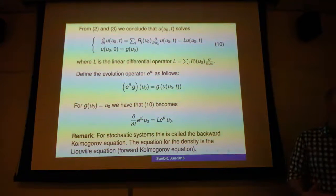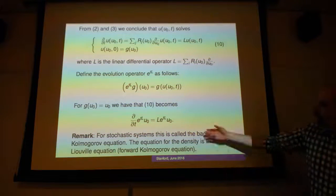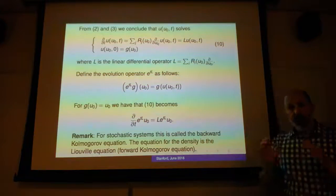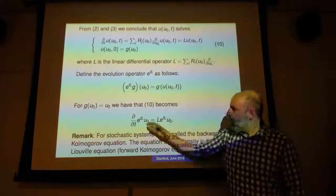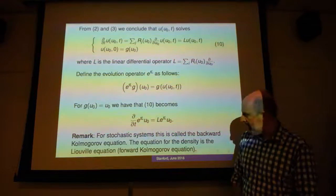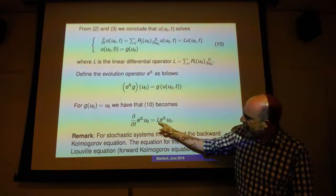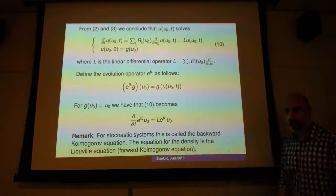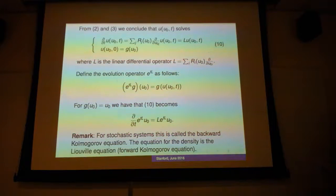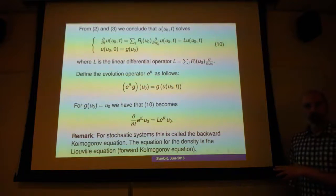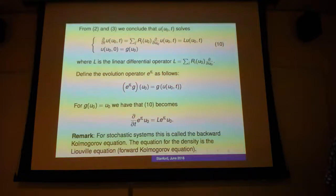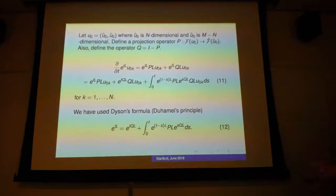These linear PDEs, if you have a background in probability or statistical physics, correspond to the backward Kolmogorov equation for the evolution of observables. The forward Kolmogorov equation — for the probability density — is what physicists call the Liouville equation, and its evolution operator is the adjoint of L.